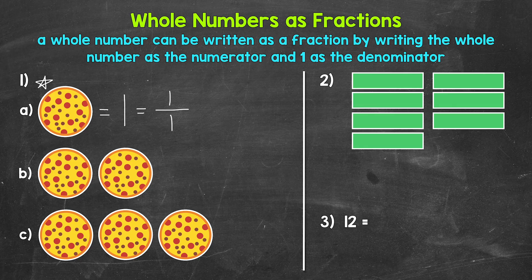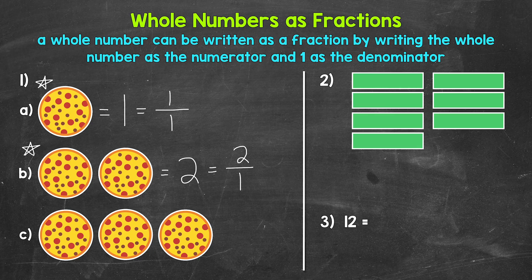Let's move on to B, where we have two pizzas — two whole pizzas. So we need to write two as a fraction. Each pizza is just one part, so one is our denominator. How many wholes do we have? Two. So two is our numerator. We have two wholes and each is divided into one part.